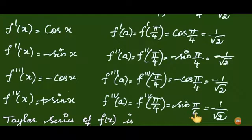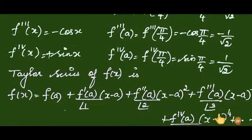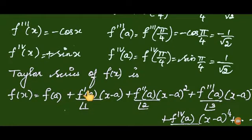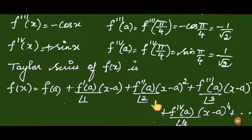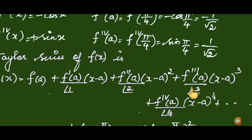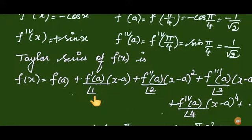Now the Taylor series of f of x is written out using the formula. The right side has f of a as the first term, then f dash of a times (x minus a) by 1 factorial, then f double dash of a times (x minus a) squared by 2 factorial, then f triple dash of a times (x minus a) cubed by 3 factorial, then f fourth of a times (x minus a) to the power 4 by 4 factorial, and so on. The difference between Taylor and McLaurin series is that here we have a, whereas in the McLaurin series a equals 0.